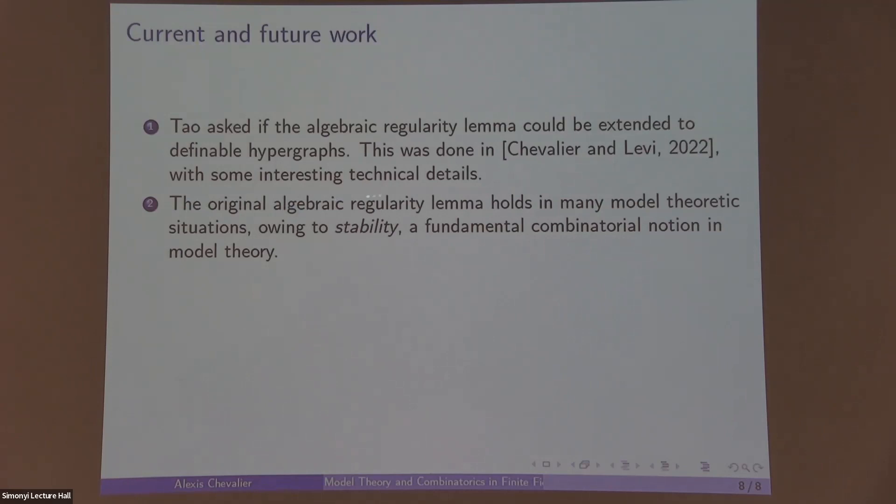An interesting related topic: the original algebraic regularity lemma holds in many model theoretic situations owing to stability, which is a fundamental combinatorial notion in model theory. What I mean here is, after Tao published his proof of the algebraic regularity lemma, the model theory community got to work to try and understand what was going on there. The original proof was very long and quite complicated, and this was eventually boiled down to purely combinatorial properties of the definable measure which we introduced before. The key property of the definable measure was that for a single formula φ(x,y), μ of φ(x,b) can take only finitely many values as b varies. And this turns out to be an instance of stability, which is a certain graph-theoretic notion in model theory.